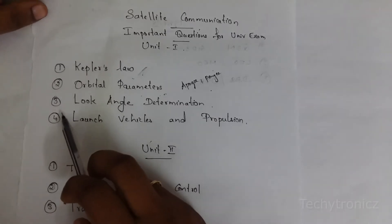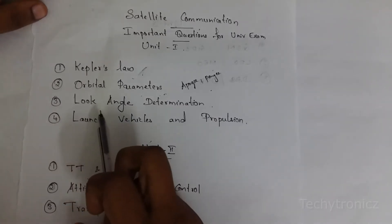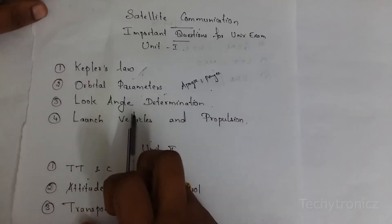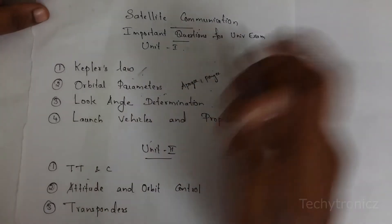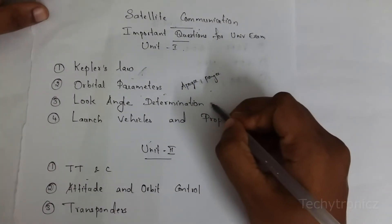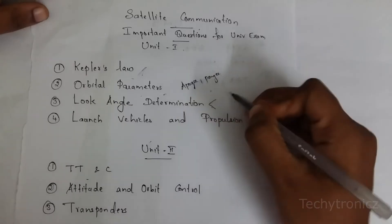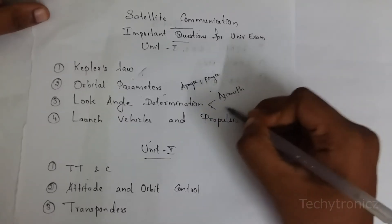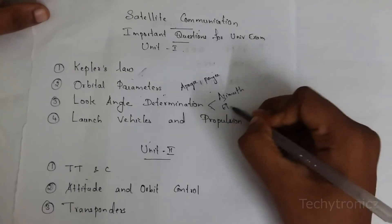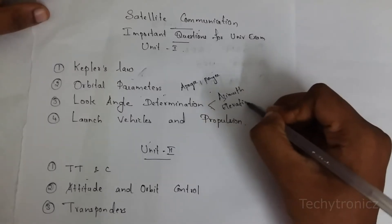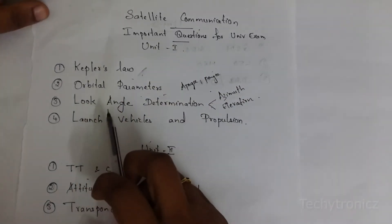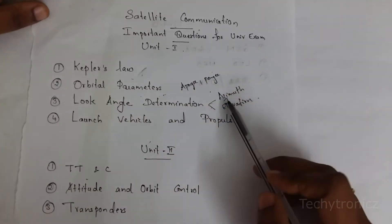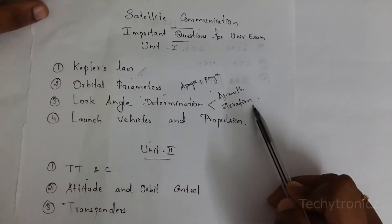Another important question is look angle determination. This is one of the most important questions — in look angle determination you have to find the azimuth angle and elevation angle. You have to learn look angle determination using these two angles.